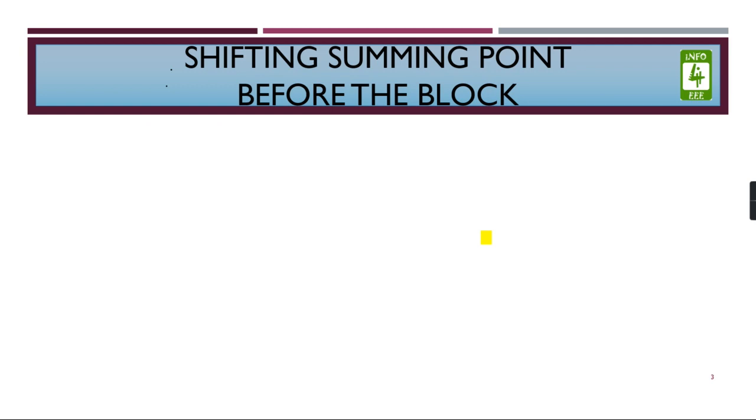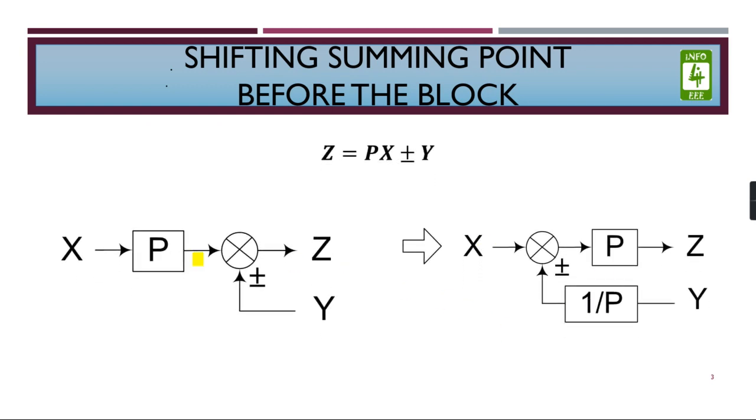Coming to the next transformation, shifting summing point before the block. If there is a summing point after this block, then we can shift it before it, and to do so we can add a block, the reciprocal of the block, in the feedback path or the path entering the summing point.